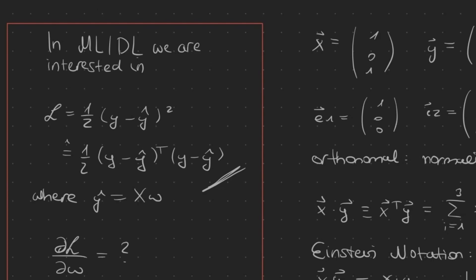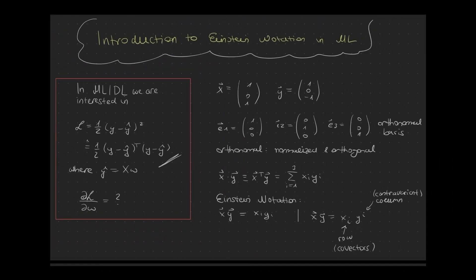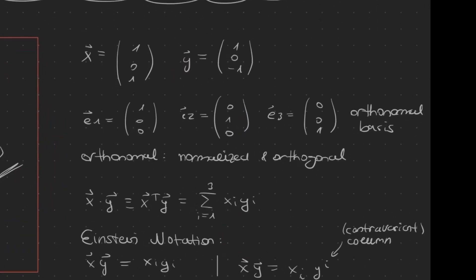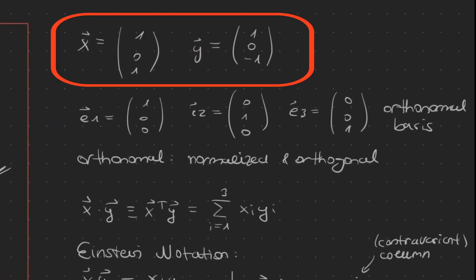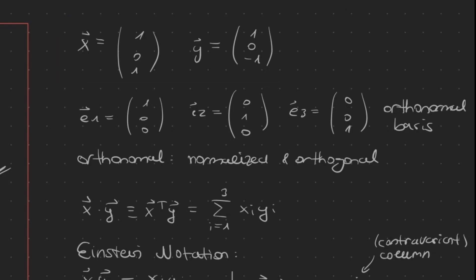So what is the derivative of your objective function with respect to the weight vector? Well, before we actually answer this question we have to talk a little bit about linear algebra. We often deal with vectors — for example, we have here two vectors x and y. x is equal to [1, 0, 1] and y is equal to [1, 0, -1], so they are three-dimensional.